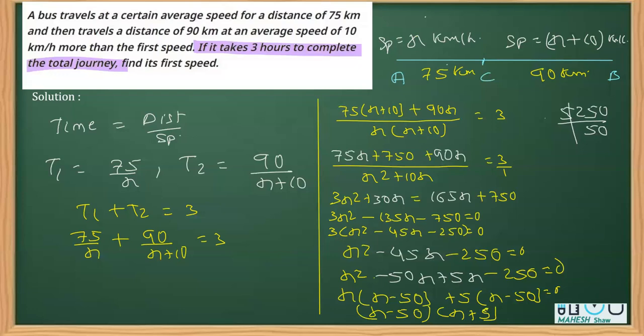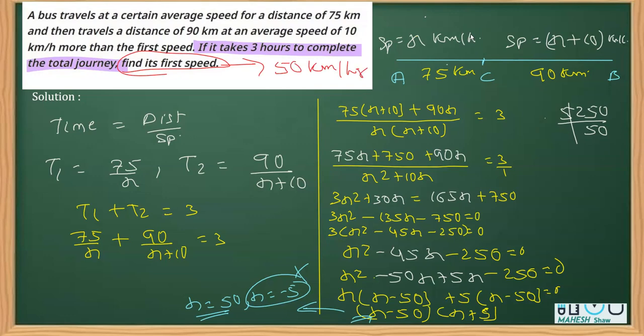Now we should equate this with 0. On equating this with 0, we'll get x equals 50 or x equals minus 5. As you know, this is not possible - speed cannot be negative. So I can say x, and that is what they have asked for - find its first speed. The first speed we got as x, which is 50 kilometers per hour. That's the final answer.